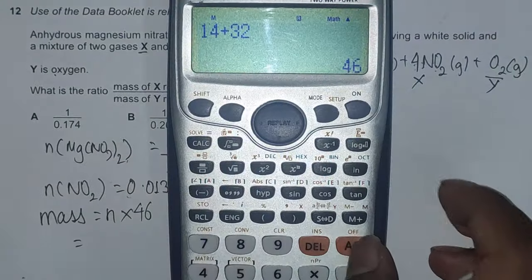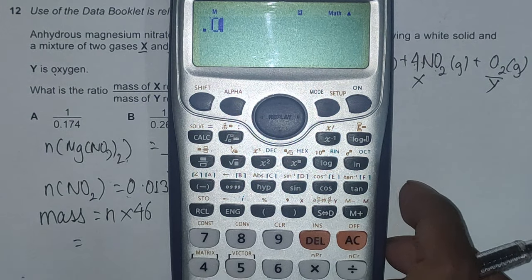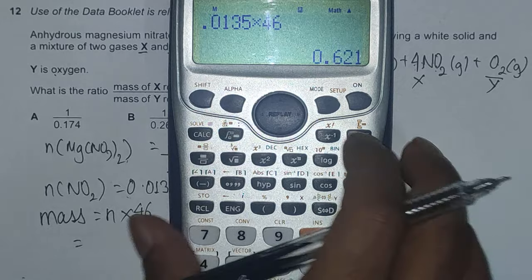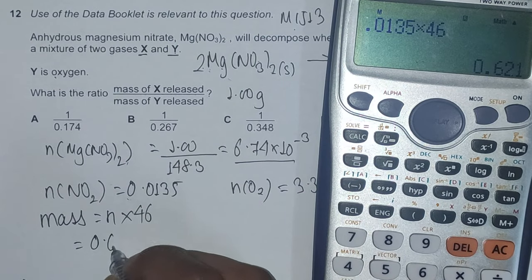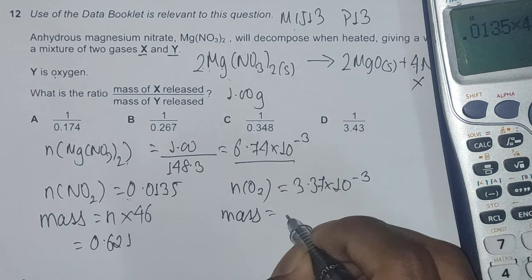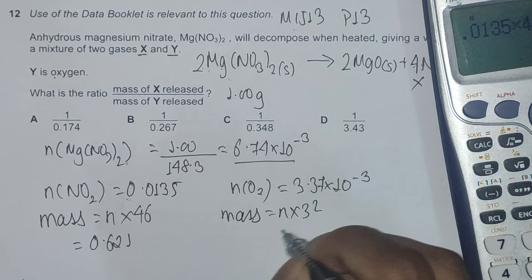And mass of oxygen is its mole multiplied by 32, which is 3.37 × 10^-3 multiplied by 32, which is 0.108.